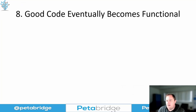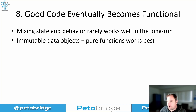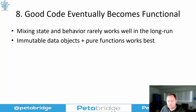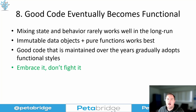Number eight: good code eventually becomes functional in style and in its nature. Mixing state and behavior — which is part of the premise of object-oriented programming — rarely works well in the long run. What tends to work better is separating these two concerns. Immutable data objects plus pure functions work best — this is basically F#'s defaults. Most of us here are C# developers, but F#'s defaults are correct. This works best because it's easier to reason about, easier to test, easier to retry, and ultimately leads to code that is simple, understandable, composable, and safe. Good code maintained over many years gradually adopts styles like this. Object-oriented programming is the training wheels on which pretty much everybody learned to program, but functional programming is where you'll end up if you keep honing your craft over many years.